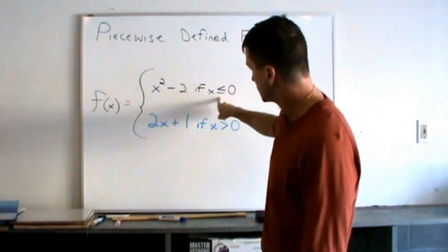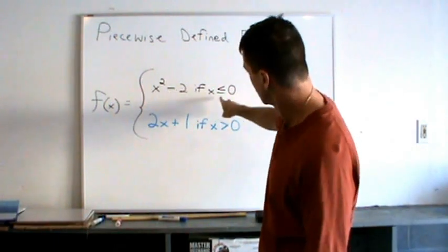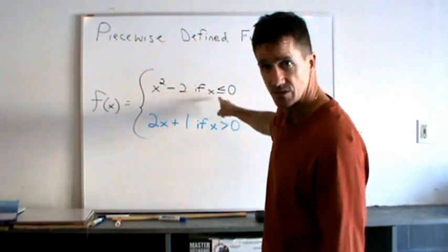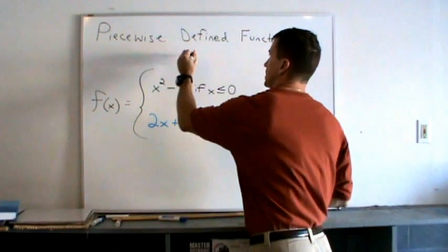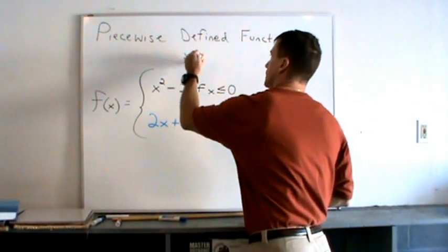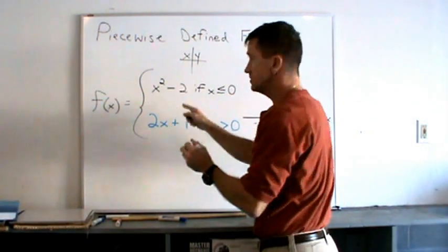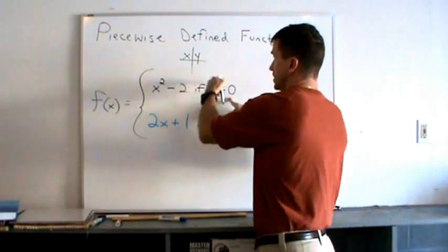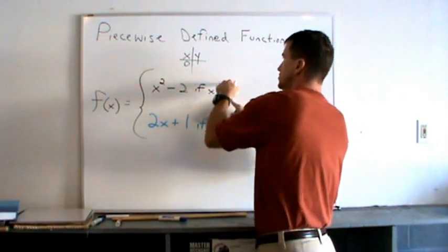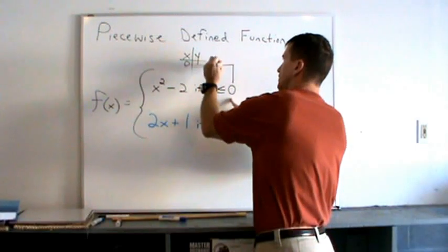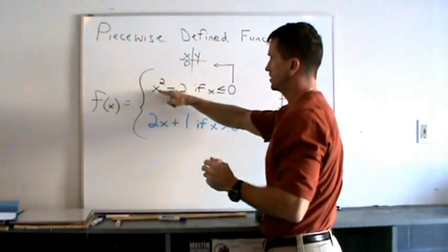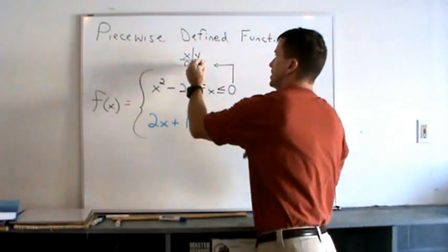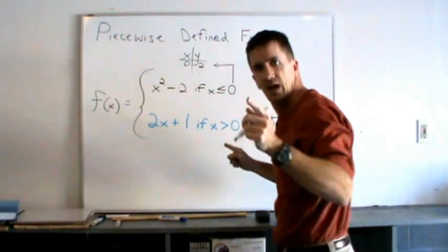When it comes to sketching this it's not that bad. All we have to do is substitute points for this function that are less than or equal to 0. I'm going to make a little table for this piece. Let's use 0. I'm going to substitute 0 into this portion. 0 squared minus 2 is negative 2 and I'm going to plot that.